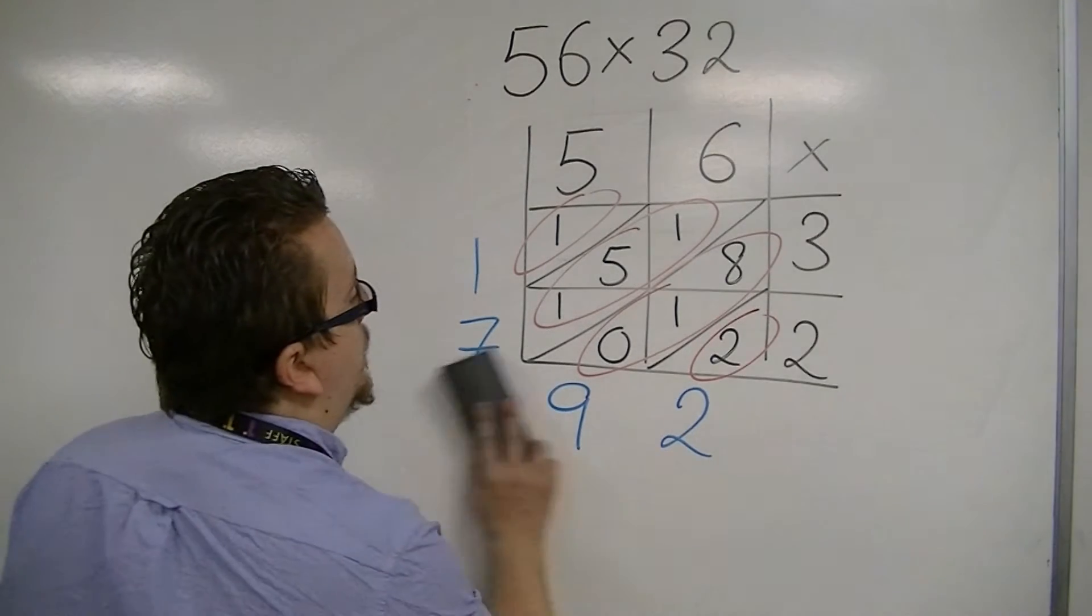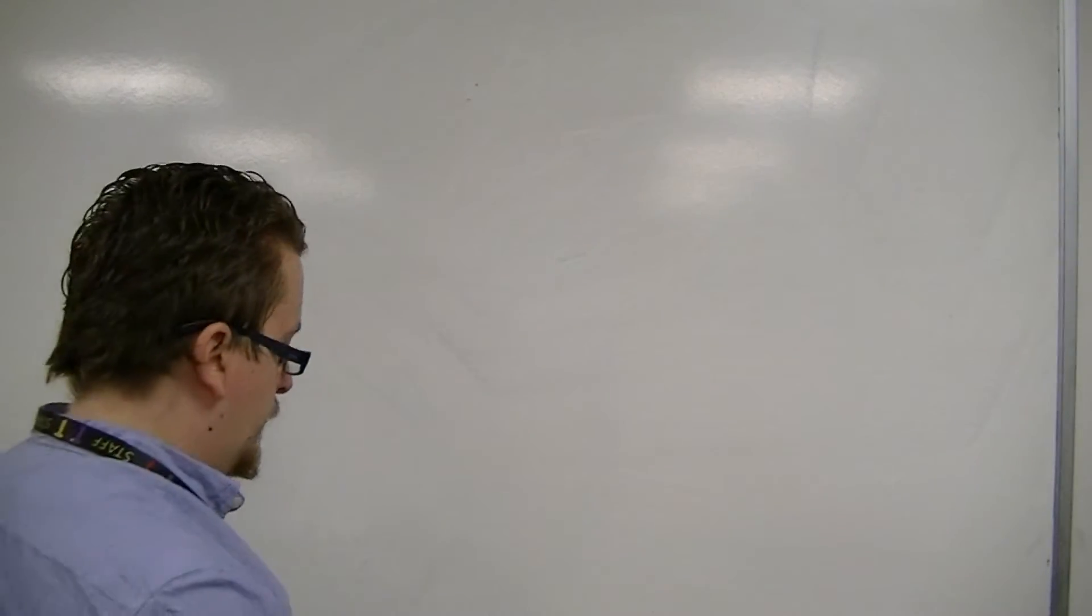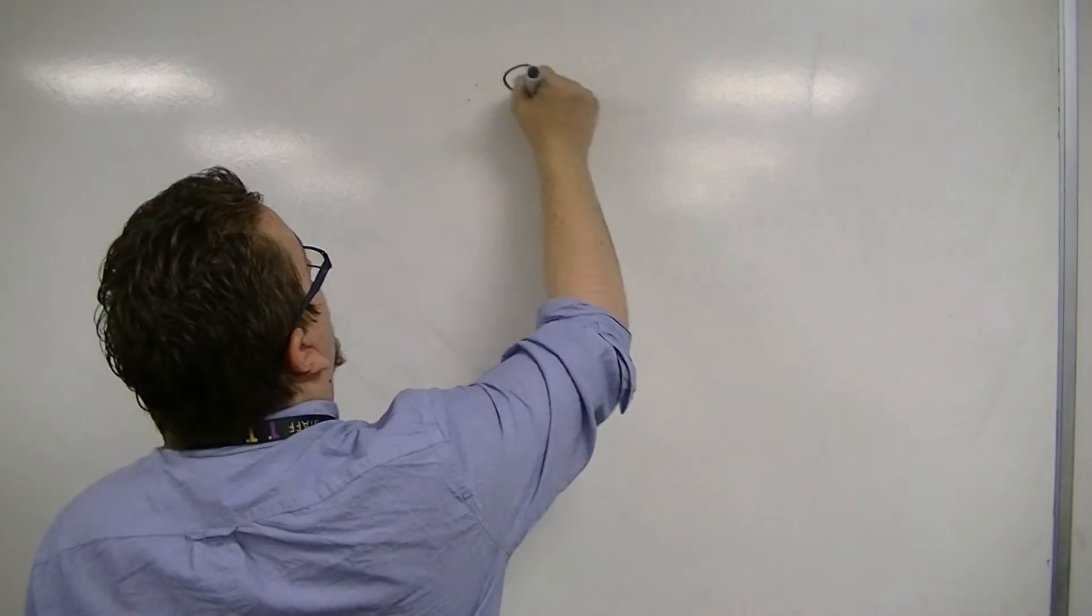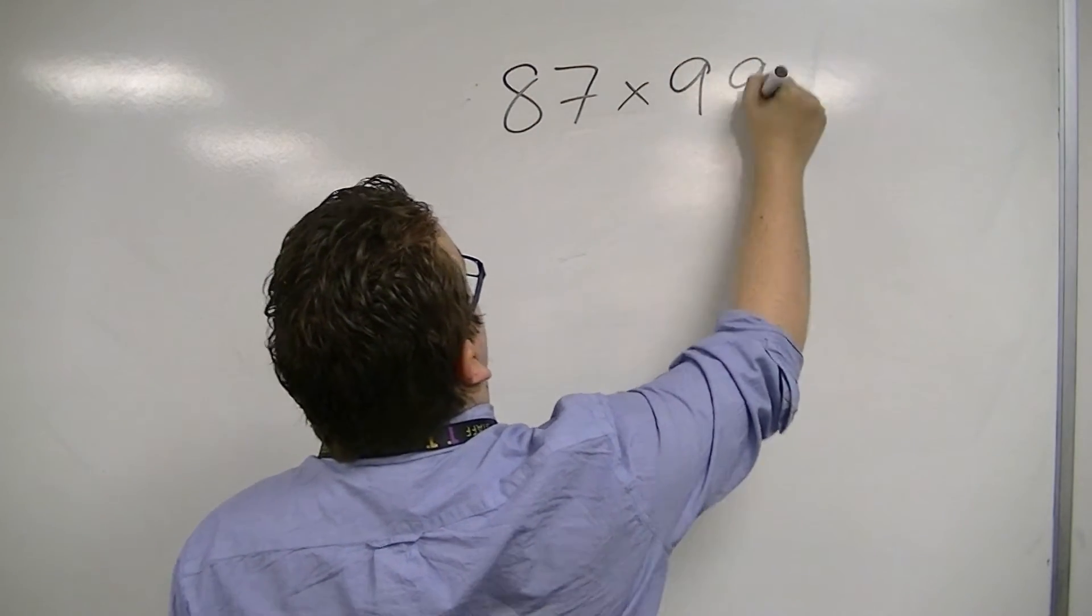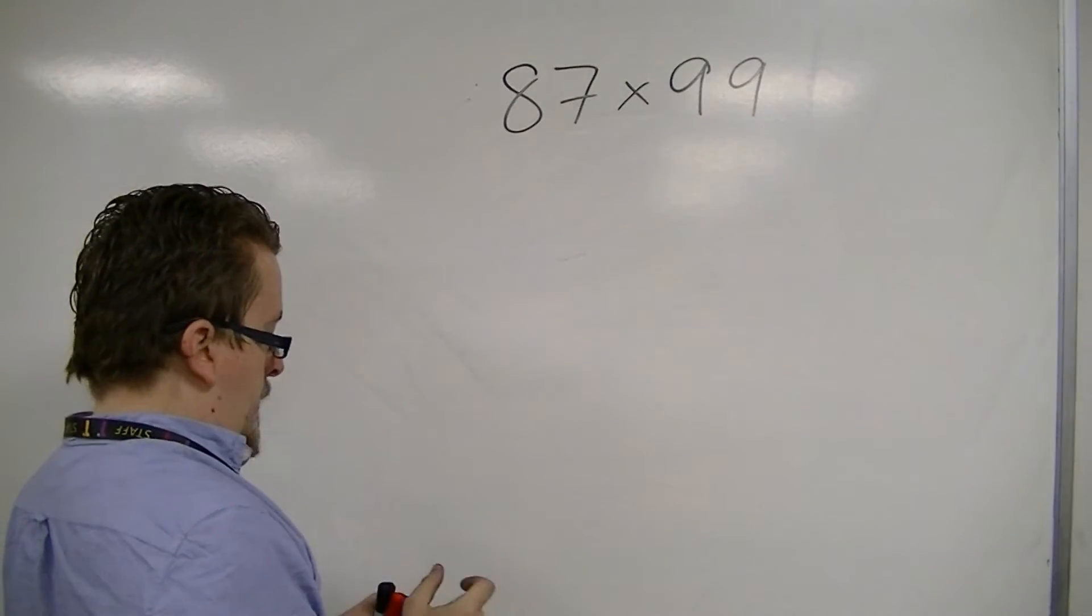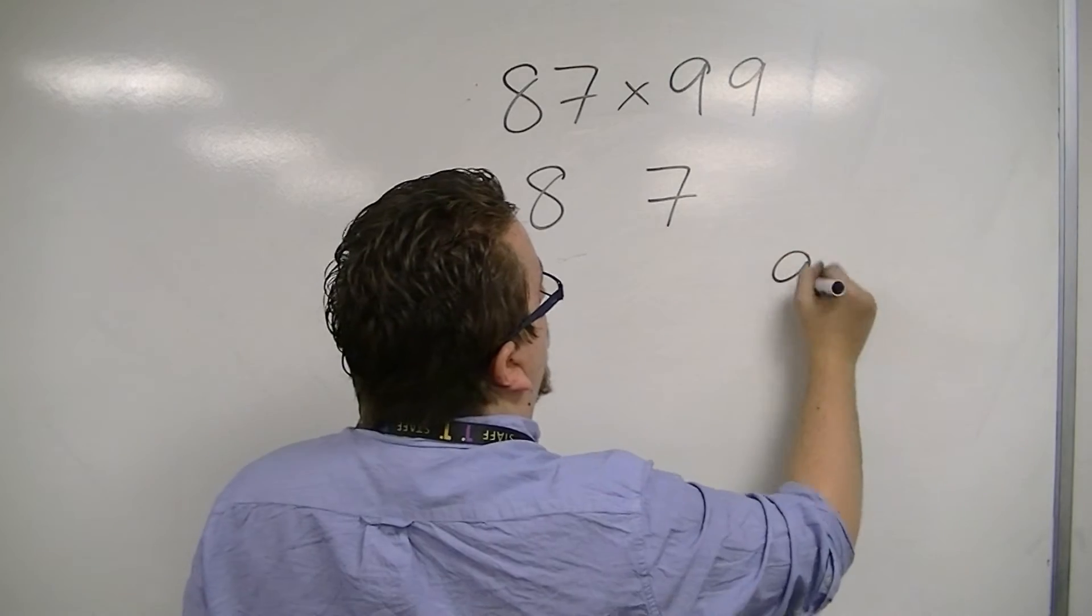Let's look at another one. Let's try 87 times 99. So, we set out in a similar way. 8, 7, 9, 9.